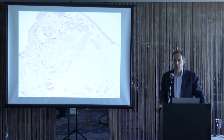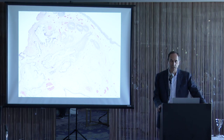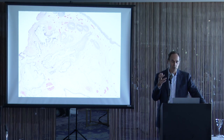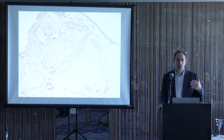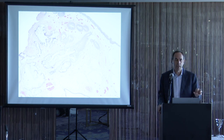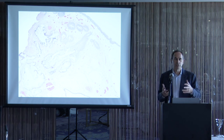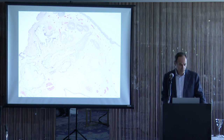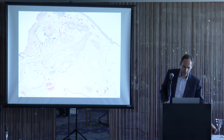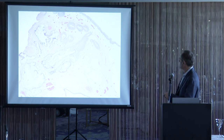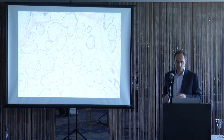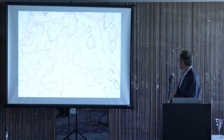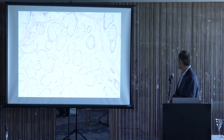Florid intestinal metaplasia can make a tumor-like mass at cystoscopy and imaging. Clinicians may push back when you sign something out as florid intestinal metaplasia. You can see a transition between cystitis glandularis and intestinal-type metaplasia. Note the extracellular mucin — it's acellular. The glands floating in mucin have very bland cytology: nuclei basally located with abundant goblet cells.